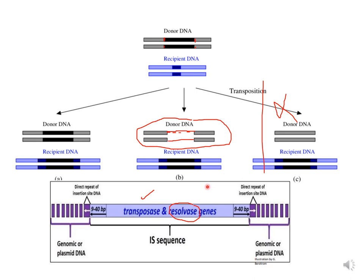In the bottom part of the diagram, you can see the structure of a transposon: in the center are transposase and resolvase genes, flanked by inverted repeats, which are in turn flanked by direct repeats. The region containing the coding sequence and inverted repeats constitutes the IS sequence — the insertion sequence. The direct repeats are generated in the host DNA upon insertion.